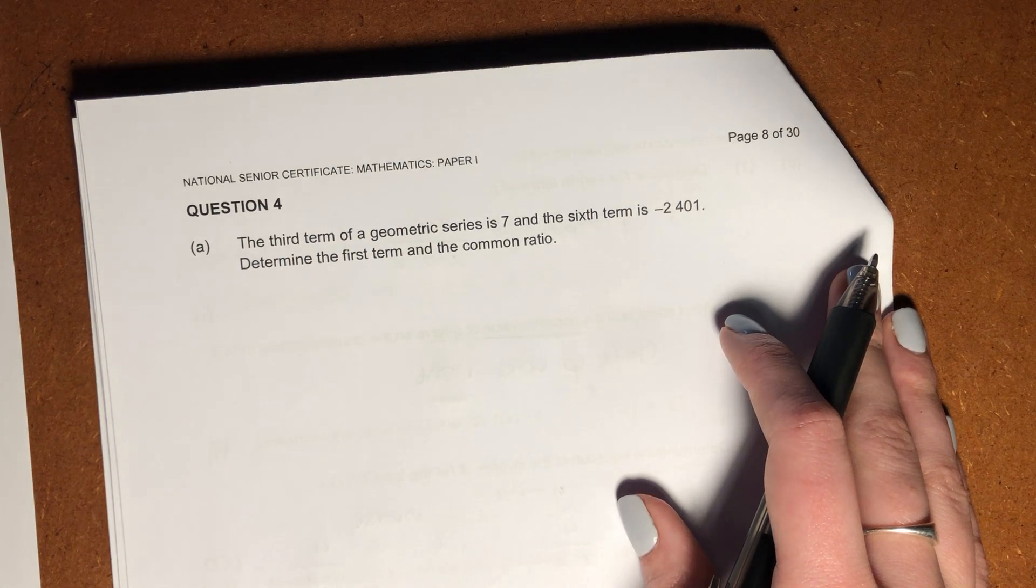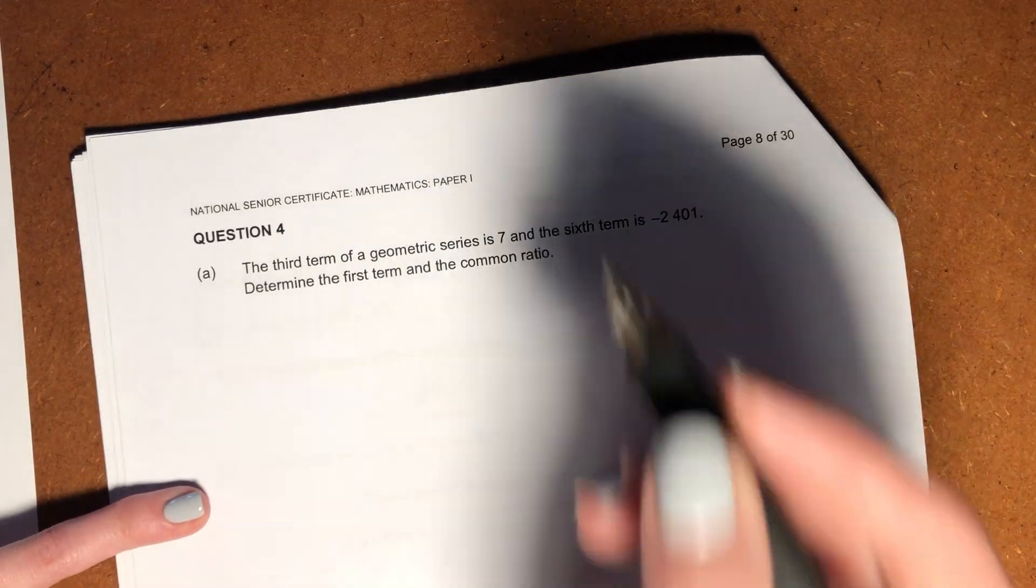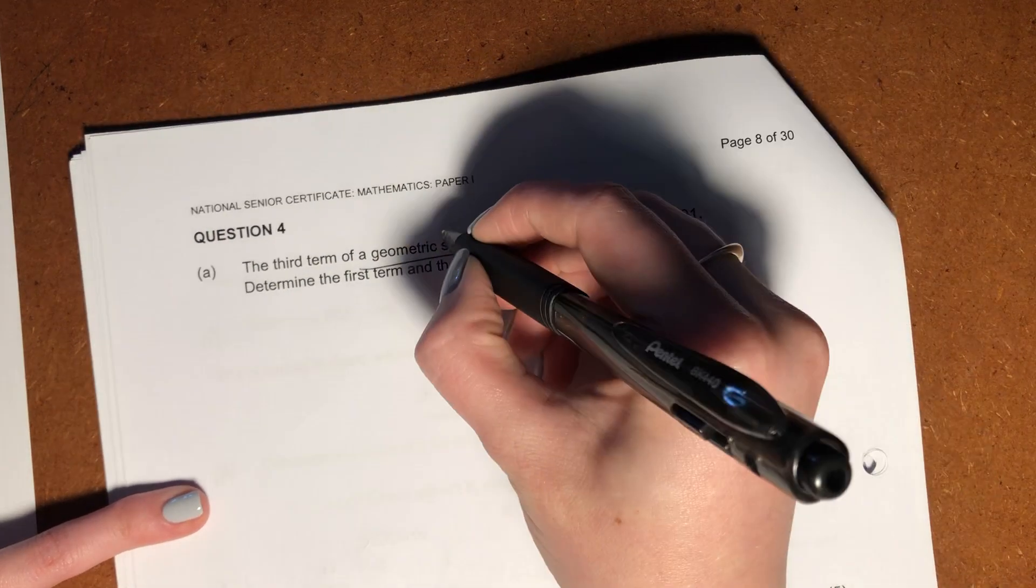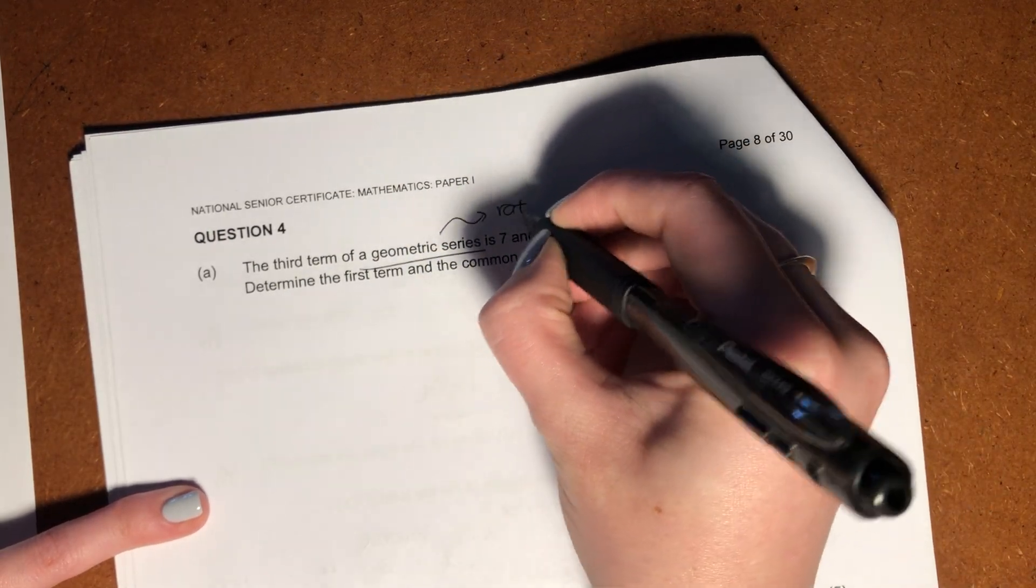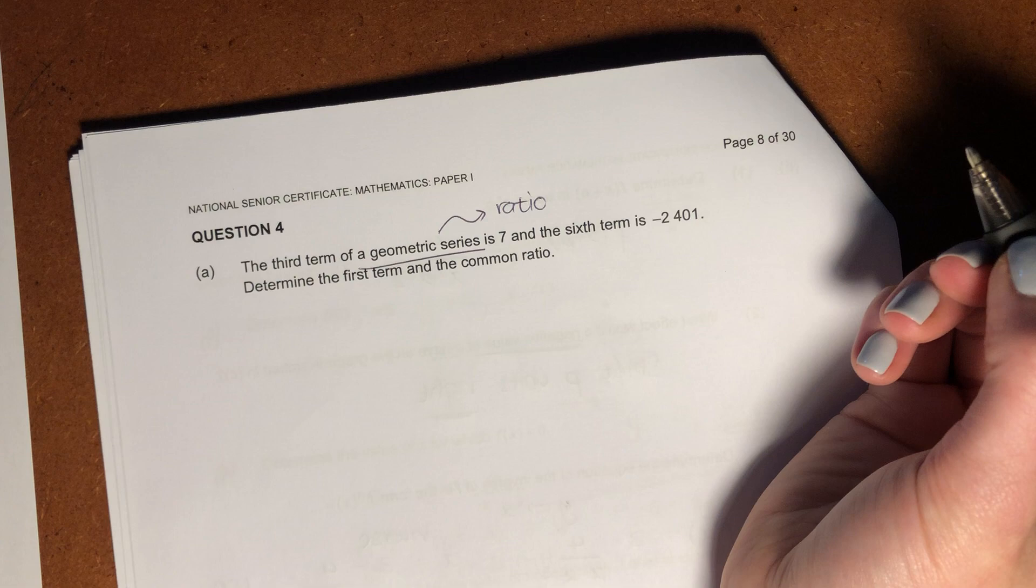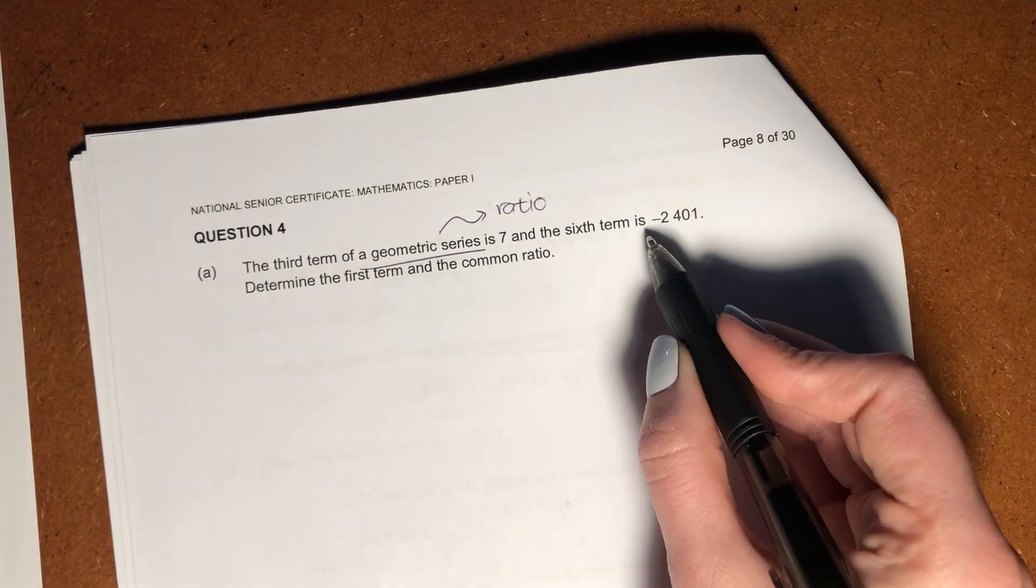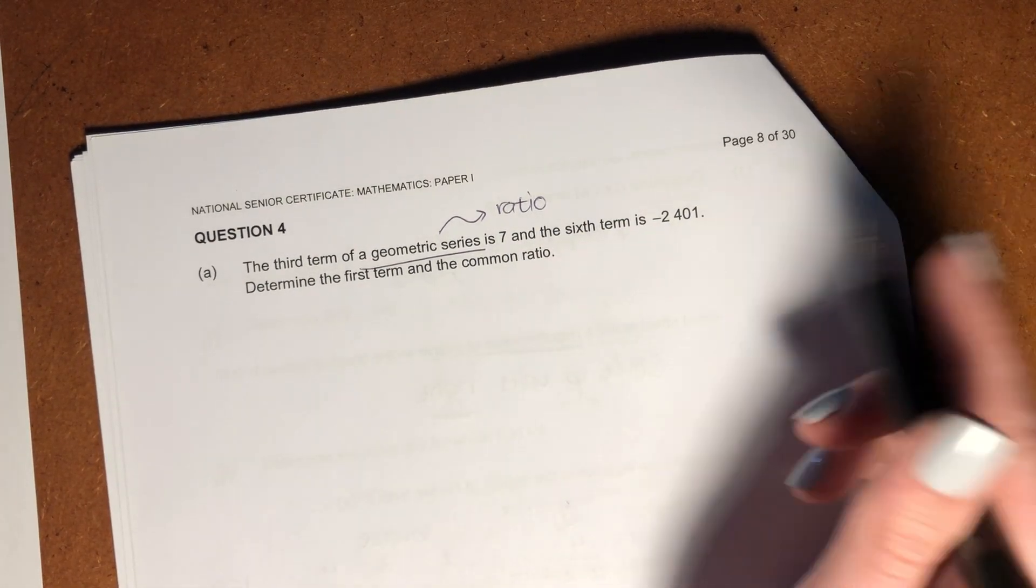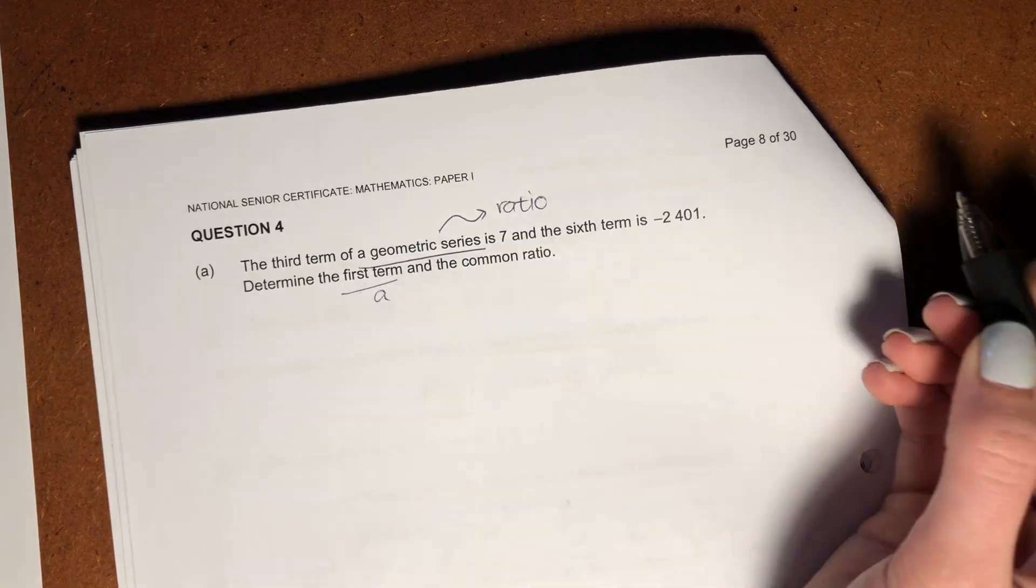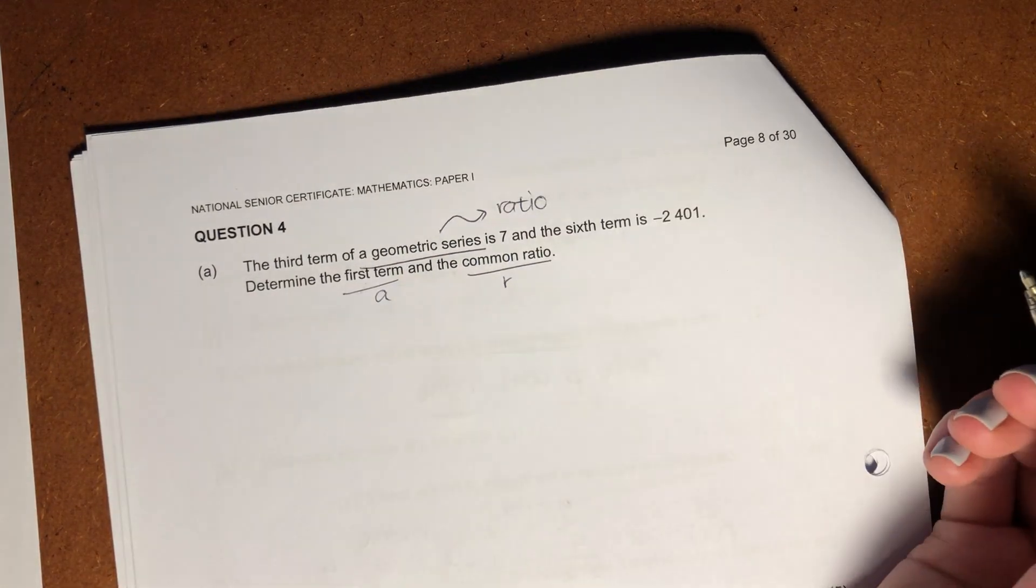Okay, so let's start by reading. The third term of a geometric series - you should be thinking ratio for that one - is 7, and the sixth term is negative 2,401. Determine the first term, which is effectively A, and the common ratio, which is R.